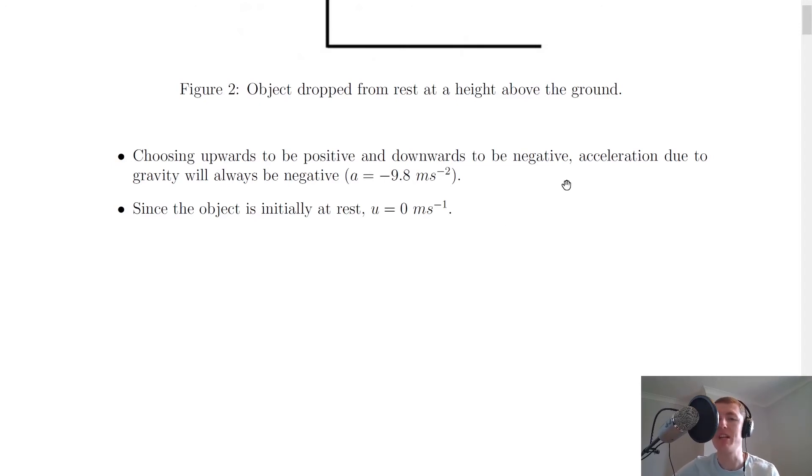And it makes sense for projectile problems to define upwards as positive and downwards as negative. It then says since the object is initially at rest, U equals 0 meters per second.